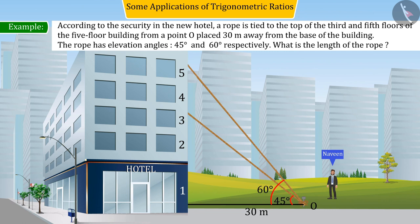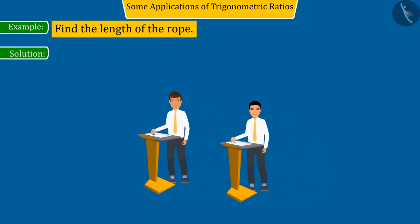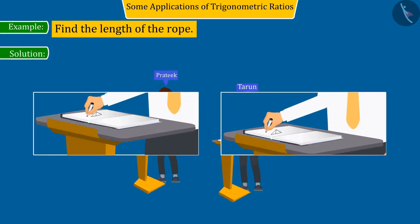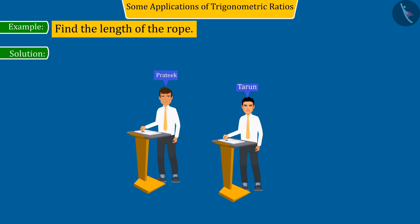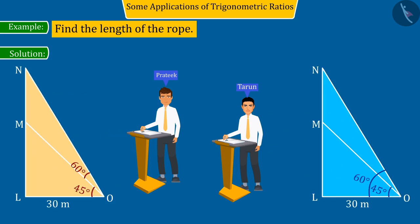But Naveen does not know what is the length of the rope used for this. So he asked the hotel staff Pratik and Tarun to find the length of the rope. They both used trigonometric ratios to find the length, and both of them first create the figure in their notebook with the help of the given information.